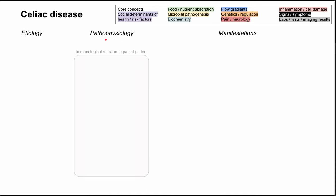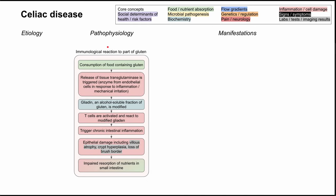Starting with the pathophysiology: the short version is that in celiac disease, you have an immunological reaction to a part of gluten. When you consume food containing gluten, this irritates or inflames the endothelial cells in the gut and triggers them to release tissue transglutaminase. This enzyme then modifies gliadin, which is an alcohol-soluble fraction of gluten. That then activates T cells to react to the modified gliadin, triggering chronic intestinal inflammation, which causes epithelial damage.